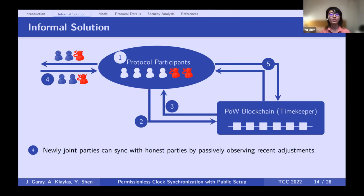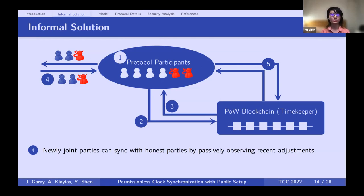Since this is a permissionless protocol, parties can join and leave. For joining parties, we provide a mechanism to sync with honest parties. Newly joined parties have no knowledge of the protocol time — they only know the CRS or genesis block. They bootstrap the blockchain from the genesis block and passively listen to the protocol. After observing a complete synchronization interval, they have blockchain information and can book-keep local arrival times of all sync messages, allowing similar adjustments to catch up and sync with honest parties.